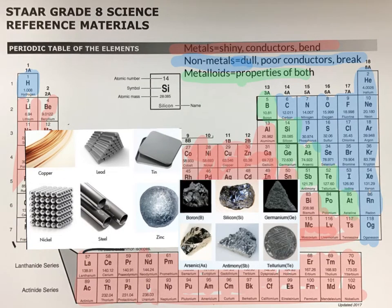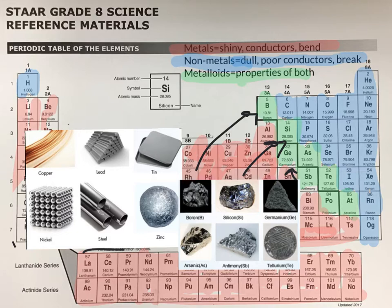Next, we're going to talk about the metalloids, which have properties of both metals and nonmetals. Boron, number 5 on the periodic table, is considered a metalloid, although it is kind of dull and brittle in appearance. Silicon is somewhat shiny and found in a lot of our plastics. Germanium also looks dull. Arsenic and antimony both appear shiny. And tellurium is somewhat shiny, but also kind of dull.